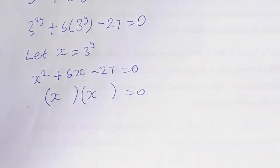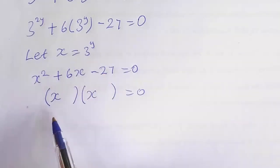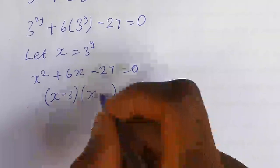We have two numbers. The two numbers should be minus 3 and 9, so that minus 3 times 9 will give you 27, and minus 3 plus 9 will give you 6. So this is minus 3 and this is plus 9.